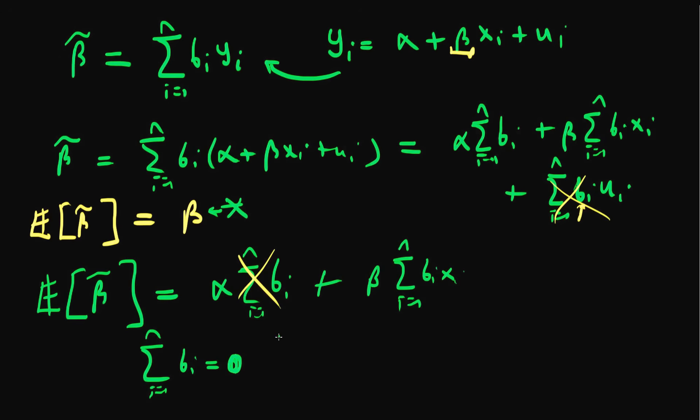And we also must have that the sum of i equals 1 to n of bi xi is going to be equal to 1, because if it's equal to 1 then I just get beta on the right-hand side, and we then have that beta tilde is in fact unbiased.